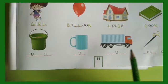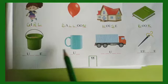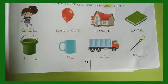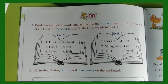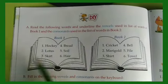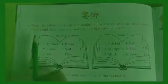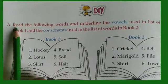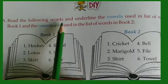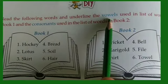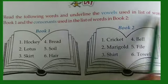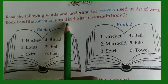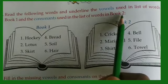So here the next line you will do it by yourself. Let's turn to page 12. Let us read — 'Read the following words and underline the vowels used in the list of words in Book 1, and the consonants used in the list of words in Book 2.'